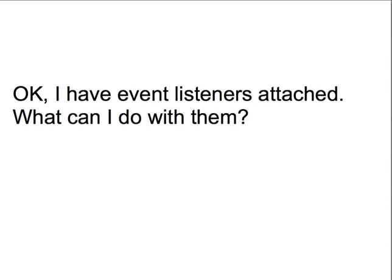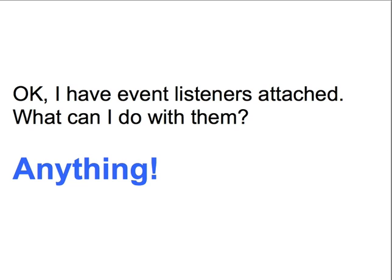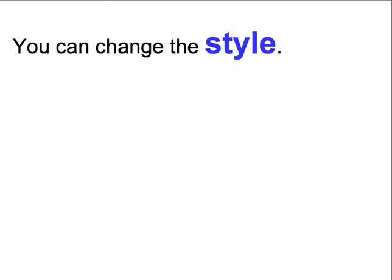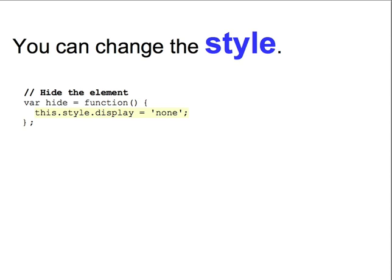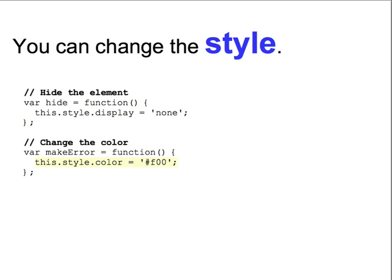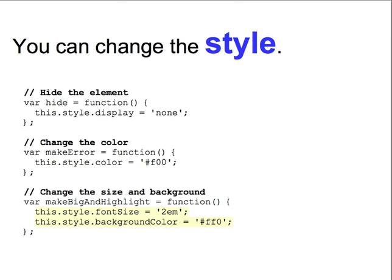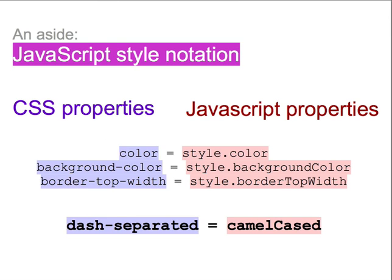So, we've got references to DOM nodes, and we've attached event listeners. Now, what can we do with them? We can change the style of our elements. We could, for example, hide an element by setting the display to none, create an error state by setting the color to red, or even create more complicated states by setting multiple style properties like font size and background color. All of the CSS styles we're familiar with from the previous section are available in JavaScript on nodes via the style object. Properties that are dash-separated in CSS are camel-cased in JavaScript.